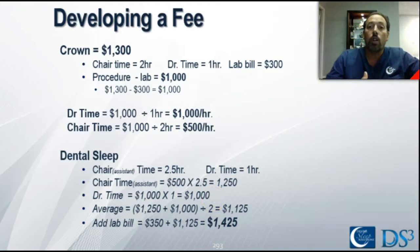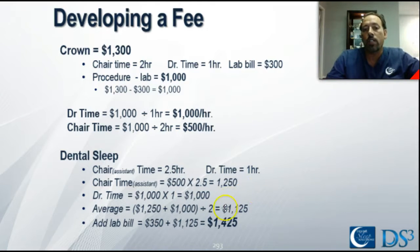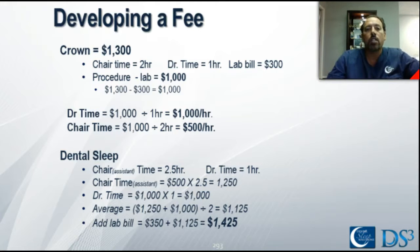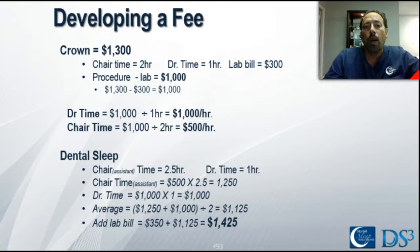I suggest in dental sleep that you may want to average these figures, because dental sleep may take less doctor time than a procedure like a crown. If you average the two, we're looking at $1,125 on average, whether looking at chair time or doctor time. We want to add a conservative lab fee of $350 — if you think your lab fee is more, then add more. In this scenario, if we net $1,425 after payment from insurance and the patient on average per case, then we're going to profit equally as well as doing one of our more favorite procedures.